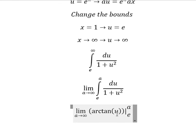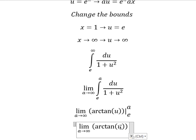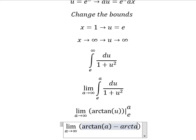So we put a in here, e in here, and then we have arctan of a minus arctan of e.